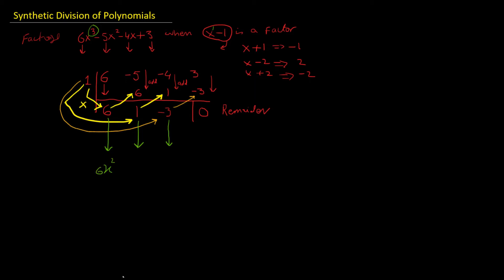The coefficient of x is 1, so it's just plus x. And the constant term is minus 3. So this is the second factor of the polynomial. The original polynomial can be written as 6x² plus x minus 3, multiplied by x minus 1. This is the same result we got in the previous example using regular division. So this method is called synthetic division.